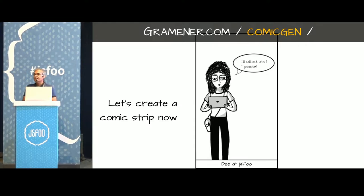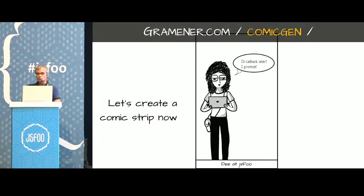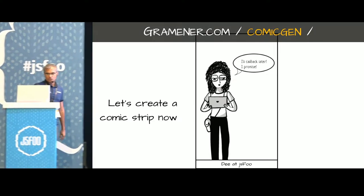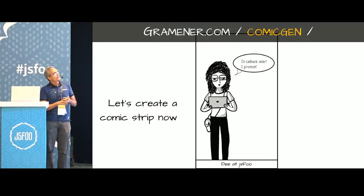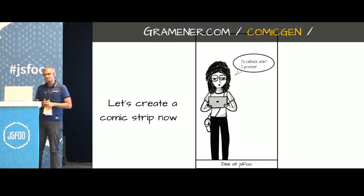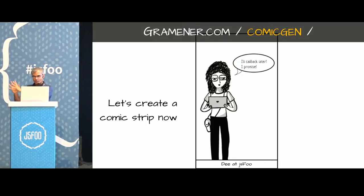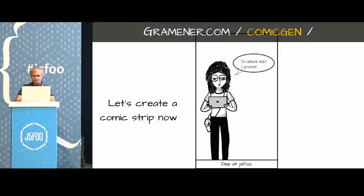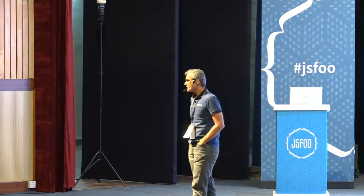Let's create a comic strip. What we're going to do is take this scenario: D is at JSFoo and she's Skyping and says, 'I'll call back later, I promise' — and hopefully you catch the pun on callbacks and promises. There was a question about flicker — if there are a lot of components on screen, it flickers. Unfortunately the artist who drew D drew her with a lot of hair and very intricate detail, so D in particular has pretty low SVG rendering performance.